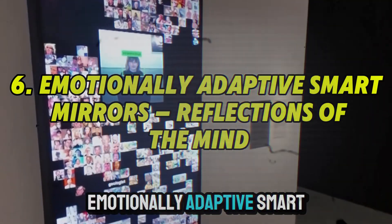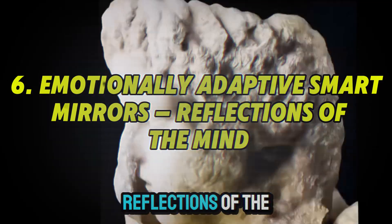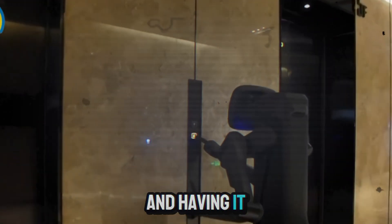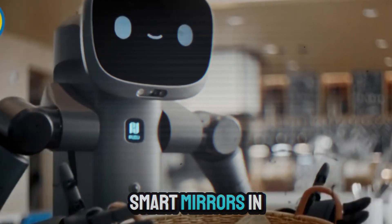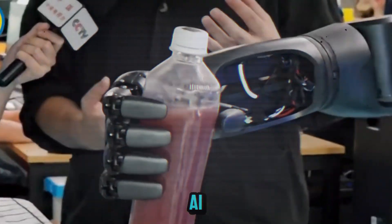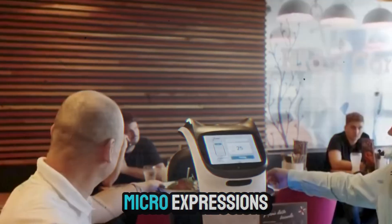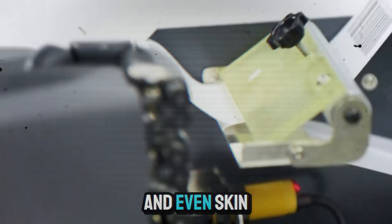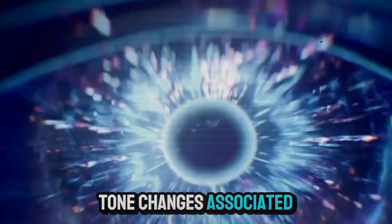6. Emotionally adaptive smart mirrors. Reflections of the mind. Imagine looking into your mirror and having it reflect more than your face. Smart mirrors in 2025 are now equipped with emotion-detecting AI, capable of analyzing micro-expressions, pupil dilation, posture, and even skin tone changes associated with stress.